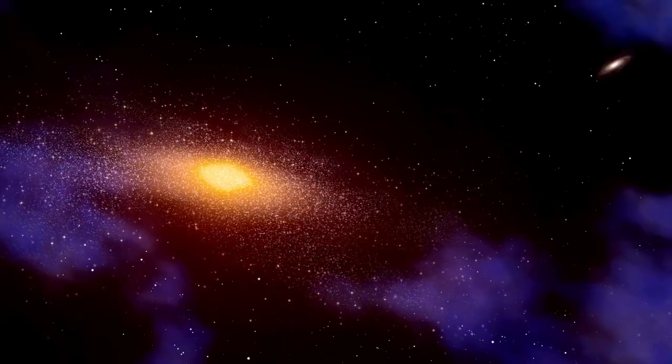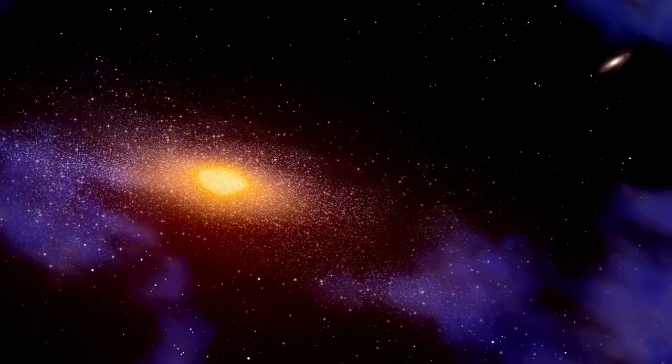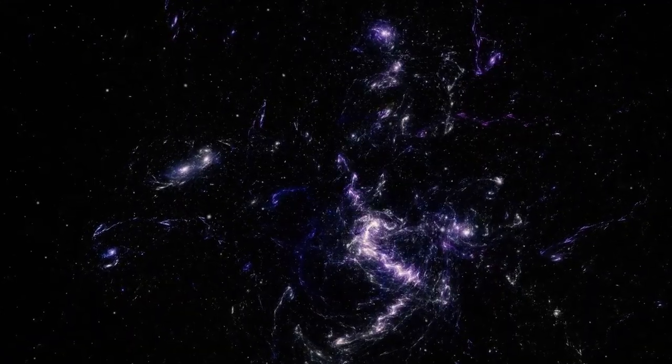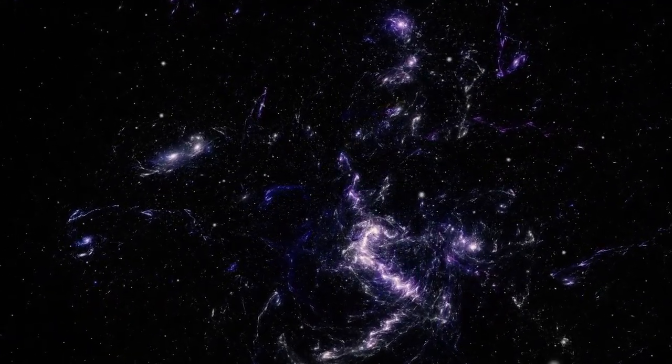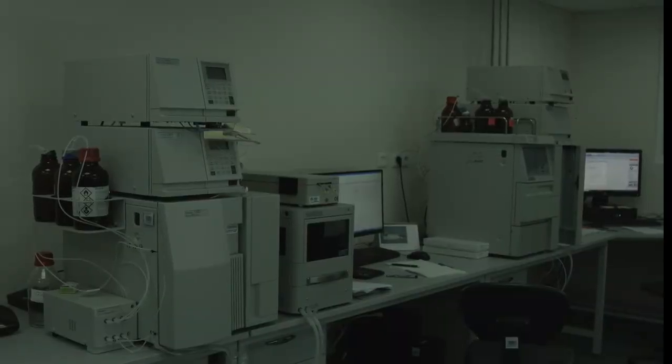For decades, scientists believed they had a clear picture of how the universe evolved. First came the Big Bang, then a Dark Age. Slowly stars began to form, then galaxies and eventually life. The further back in time we look, the simpler things should appear—just faint hydrogen clouds and scattered particles. That's what everyone expected Webb to find when it gazed at a supposedly quiet, empty stretch of sky.